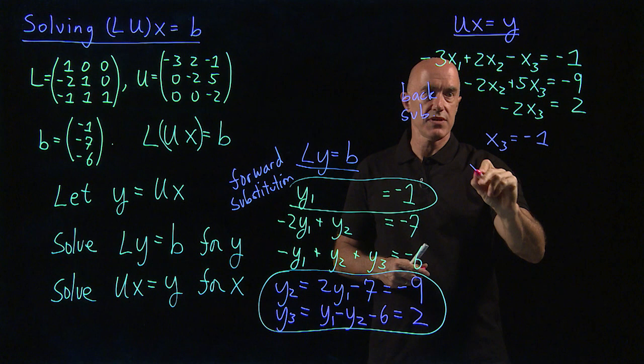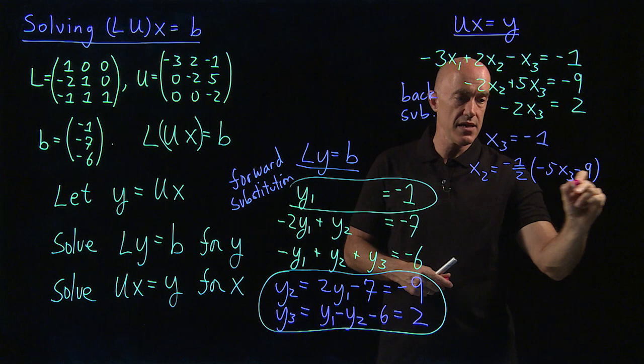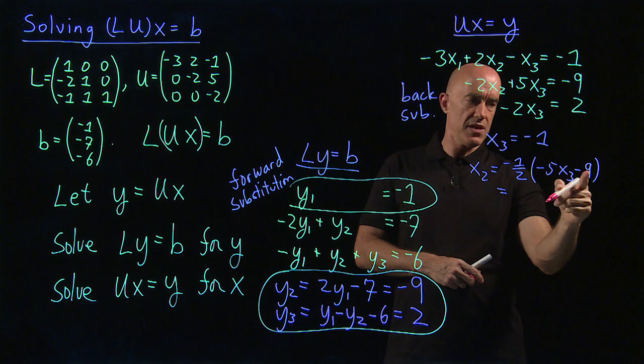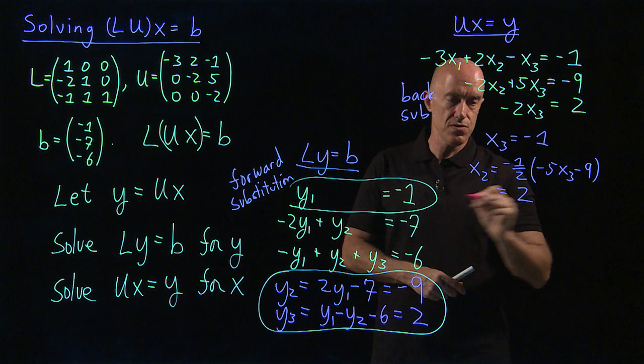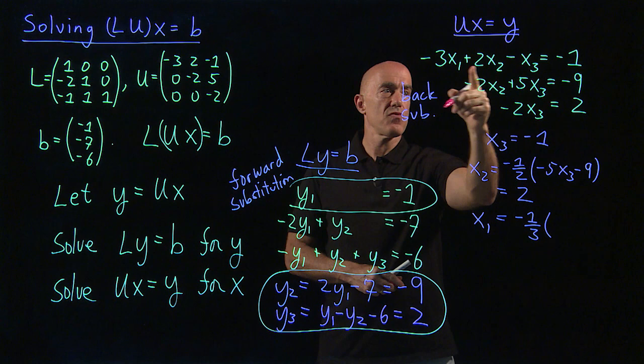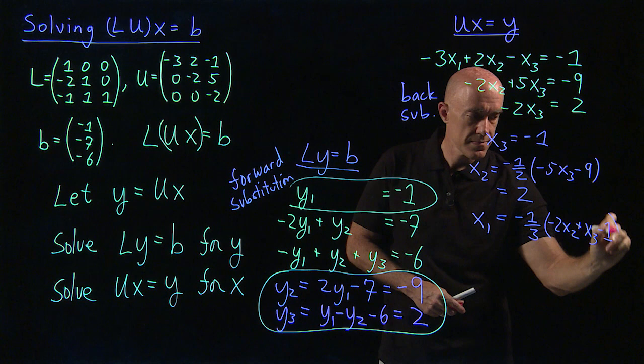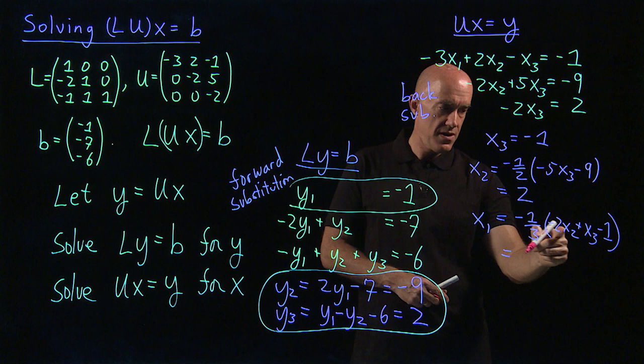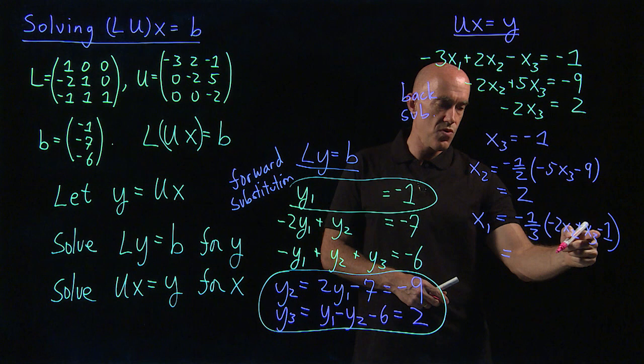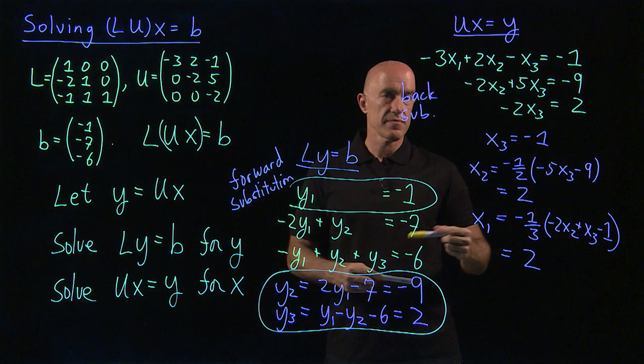So we've got here, X3 equals minus one. And then the second equation becomes X2 equals minus one half, and then we have minus five X3 minus nine. That's going to be plus five minus nine is minus four, minus four divided by minus two is two. And then the last one, X1 is going to be minus one third, and then we have minus two X2 plus X3 minus one. And we know X2 and X3. So we have minus four minus one minus five minus one minus six divided by minus three gives us two. That's our solution.